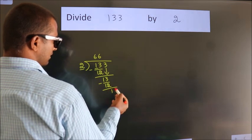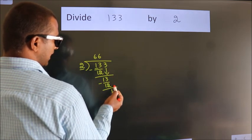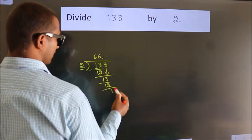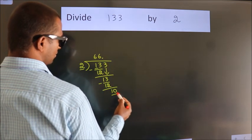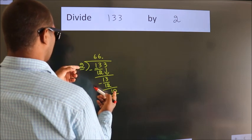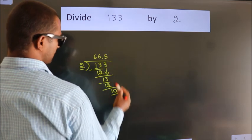After this, no more numbers to bring it down. So, what we do is, we put dot, take 0. So, 10. When do we get 10? In 2 table, 2 5s, 10.